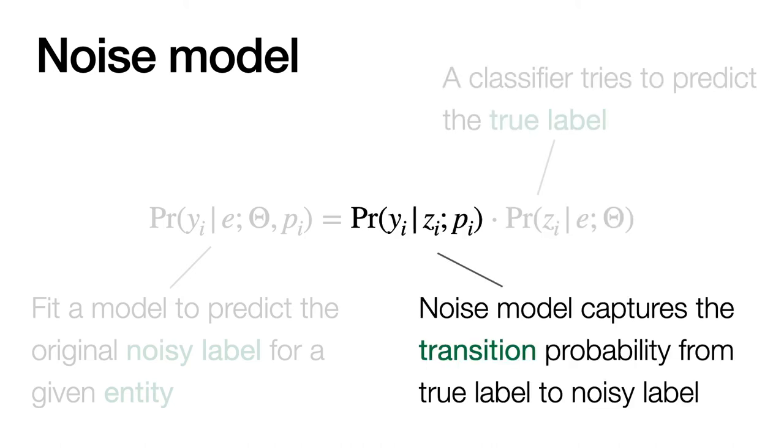And on top of that classifier, there is the noise model. The noise model is a simplified model of how the labels got corrupted. It tries to capture the transition probability from true label to noisy label.